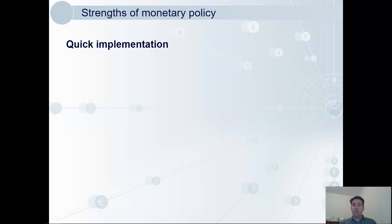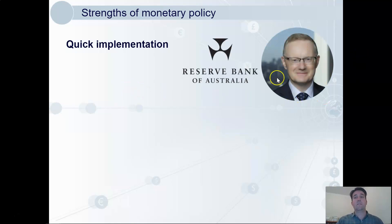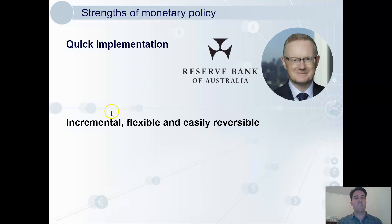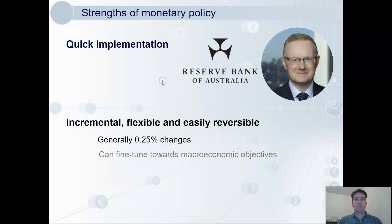We'll look at some evaluation points now. The strength of monetary policy is its quick implementation. The Reserve Bank of Australia meet regularly on the first Tuesday each month, and when the central bank changes the interest rate, the commercial banks will often start passing that on to customers straight away on that same day. In contrast, major changes to government spending and taxes — what we call fiscal policy — would require significant planning. Here, that's not necessary; it can happen very quickly. This leads to another advantage: it's incremental, flexible, and easily reversible. Changes to interest rates are usually only 0.25%, and these can easily be reversed if the circumstances change, allowing the bank to fine-tune the economy towards those macroeconomic objectives.